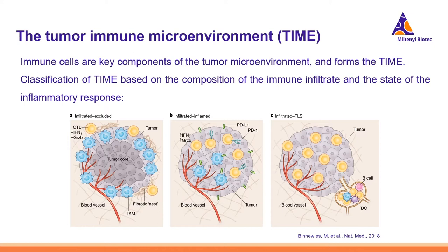If a tumor is populated with immune cells but the tumor core is relatively void of cytotoxic lymphocytes, the tumor is classified as infiltrated excluded, which is shown in figure A. We will have an example of this type later in the presentation. The second type is the infiltrated inflamed type depicted in figure B. This type is characterized by an abundance of PD-L1 expression on tumor and myeloid cells and highly activated cytotoxic lymphocytes expressing among others PD-1 and interferon gamma.